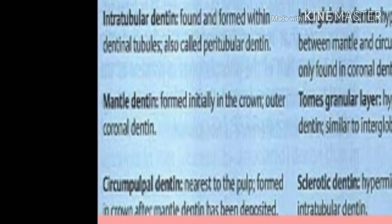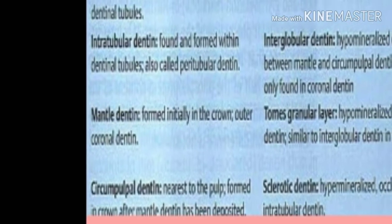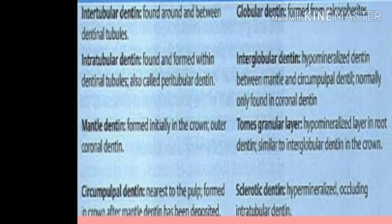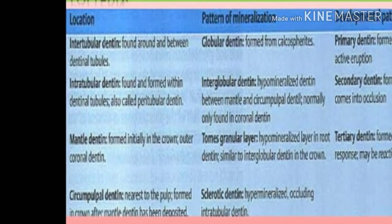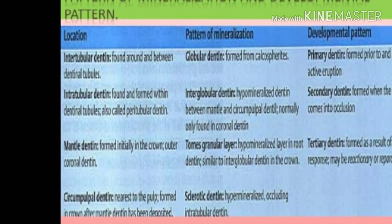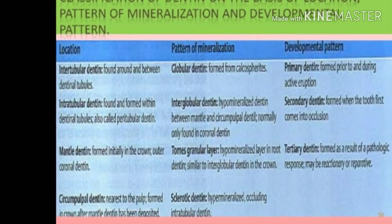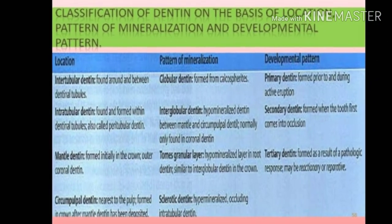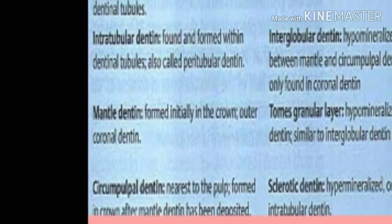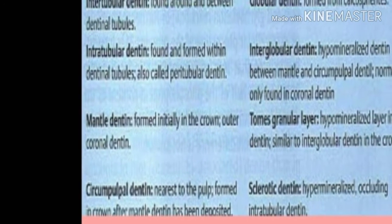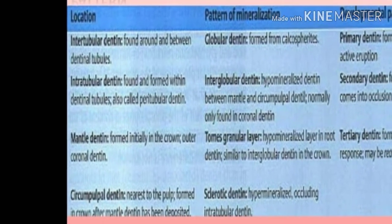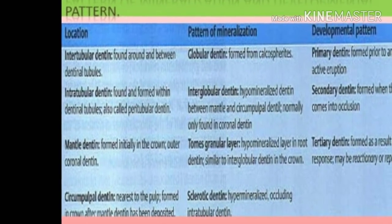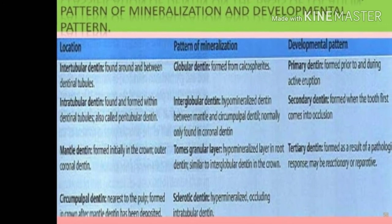Classification of dentine on the basis of location, pattern of mineralization, and developmental pattern. On the basis of location, dentine is divided into intertubular dentine, intratubular dentine, mantle dentine, and circumpulpal dentine. Intertubular dentine is formed around and between the dentinal tubules. Intratubular dentine is found and formed within the dentinal tubules, also called peritubular dentine. Mantle dentine is formed initially in the crown as the outer coronal dentine. Circumpulpal dentine is nearest to the pulp, formed in the crown after the outer mantle dentine has been deposited.